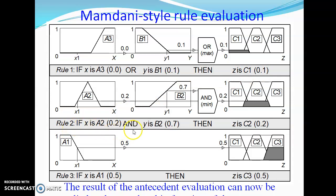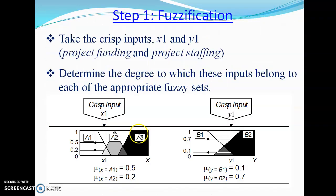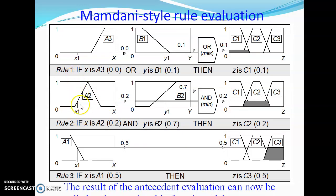Coming to Rule 2: if x is A2 AND y is B2, then z is C2. When x1 cuts A2 it gives a membership value of 0.2, and y1 gives a membership value for B2 of 0.7. Applying the AND operation means taking the minimum of these two values, so C2 becomes 0.2.